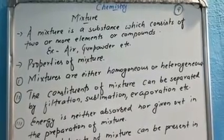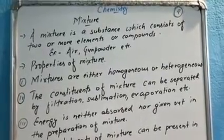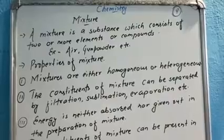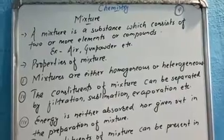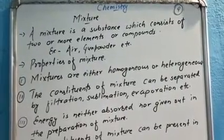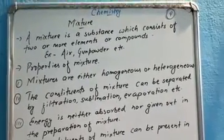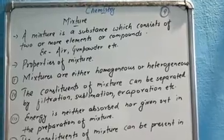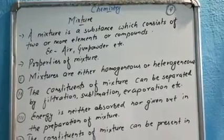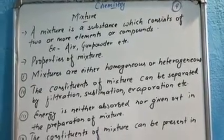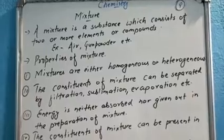So first of all, what is a mixture? A mixture is a substance which consists of two or more elements or compounds. Mixture ek aisa substance hota hai jismein 2 ya 2 se adhik tarah ke compounds ya elements mile hote hain — like air, gunpowder, etc.